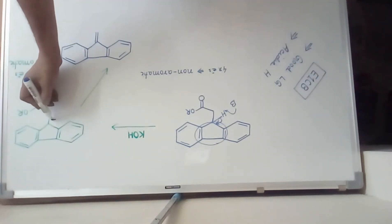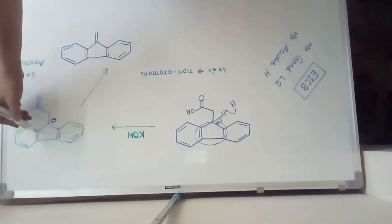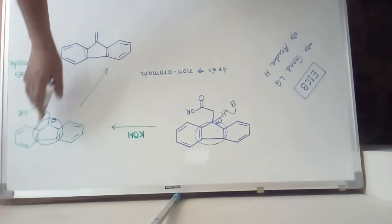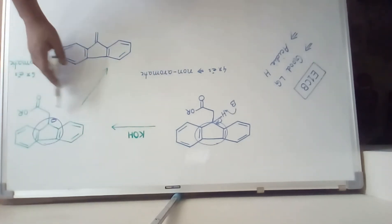And now this carbon ion will take part in resonance and then it is aromatic. It has six pi electrons. So aromatization is the driving force to form this species.